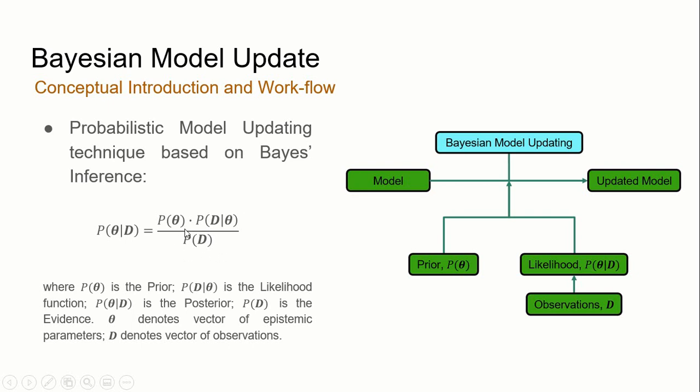The denominator is the evidence, or also known as the normalization constant, which ensures that this expression on the right, which is the posterior, sums to 1. And this expression on the right, which is the posterior, represents the updated knowledge of the input parameter that we're trying to estimate after observing the data.